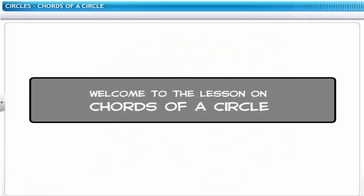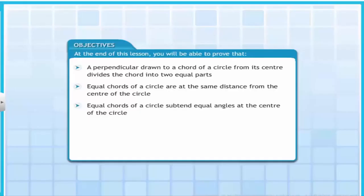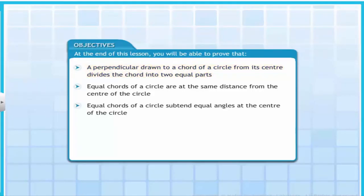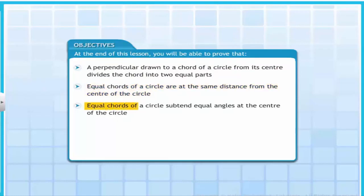Welcome to the lesson on chords of a circle. At the end of this lesson, you will be able to prove that a perpendicular drawn to a chord of a circle from its center divides the chord into two equal parts. You will also be able to prove that equal chords of a circle are at the same distance from the center, and that equal chords of a circle subtend equal angles at the center.